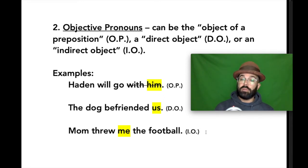And then finally, Mom threw me the football. Mom is the subject. Threw is the verb. Football is the direct object. But who received the direct object? Me. Me is an indirect object. It is also a word from the objective pronoun list. See? Not too complicated. Did you write all that stuff down?